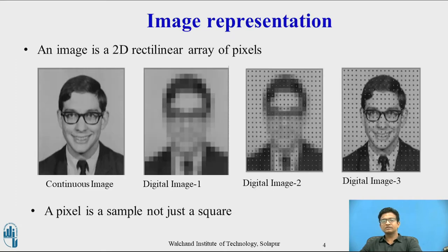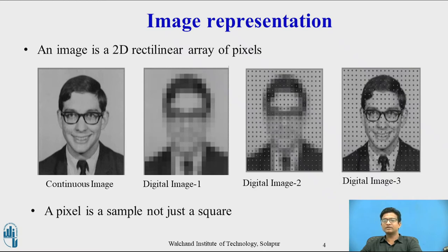Image representation: an image is a 2D rectilinear array of pixels. So modification in digital image 1 gives us digital image 2, and improvement in digital image 2 gives digital image 3. You can see the difference between a continuous image and a digital image. A pixel is a sample, not just a square.